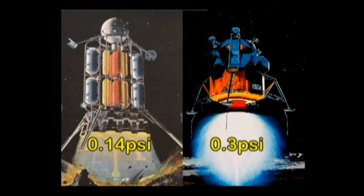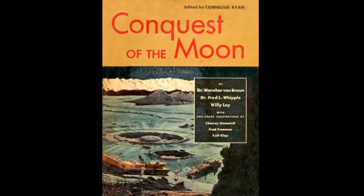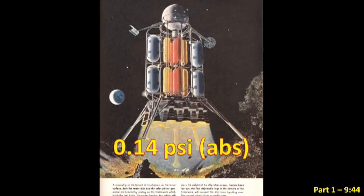It definitely looks like Jarrah got me on this one. In his 1953 book, Conquest of the Moon, von Braun presents a concept rocket, which he anticipated would dig a crater on the moon, with only 0.14 psi available.